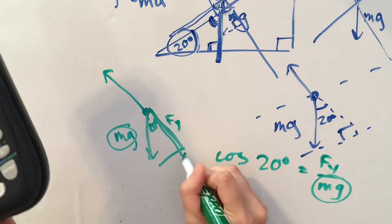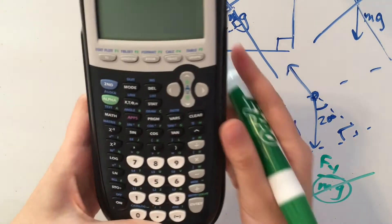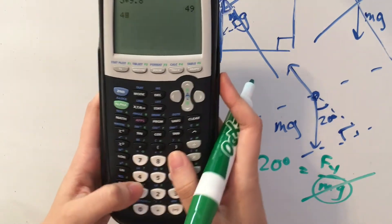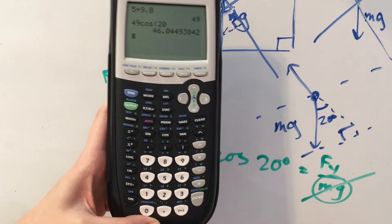Basically, our y component of our force of the earth pulling down on the ice block is going to be mg times the cosine of 20 degrees. So mg, as we said earlier, is 49. So 49 times the cosine of 20 degrees is about 46.